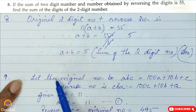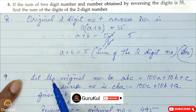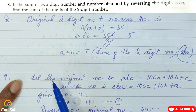Question number 8: if the sum of a two-digit number and the number obtained by reversing the digits is 55, we need to find the sum of the digits of the two-digit number. Again, according to the property, the original two-digit number plus the reverse number — plus because the question says 'sum' — has the property 11(A plus B).